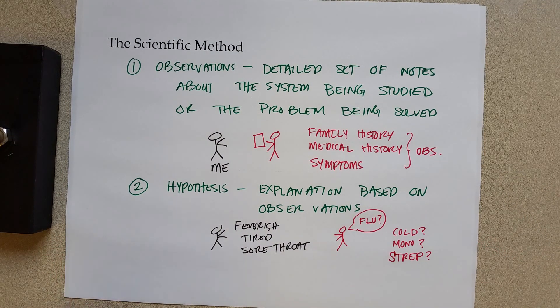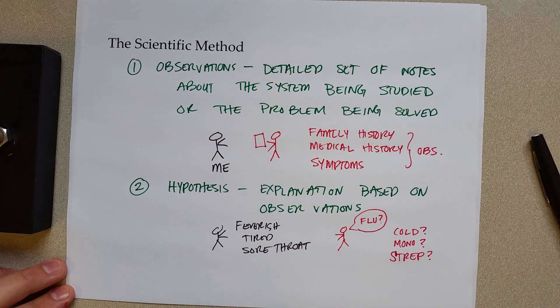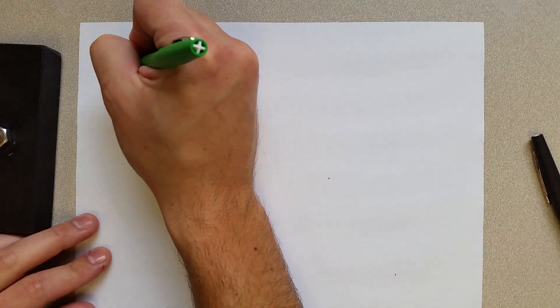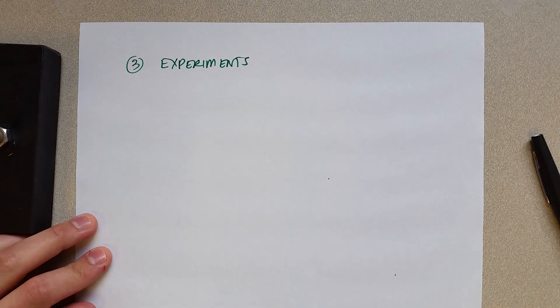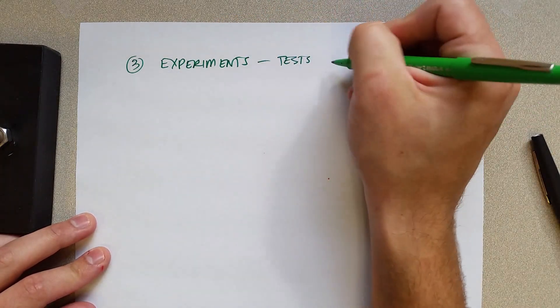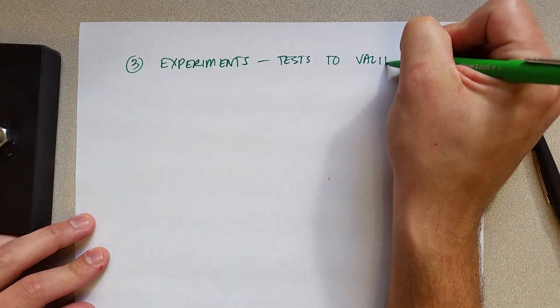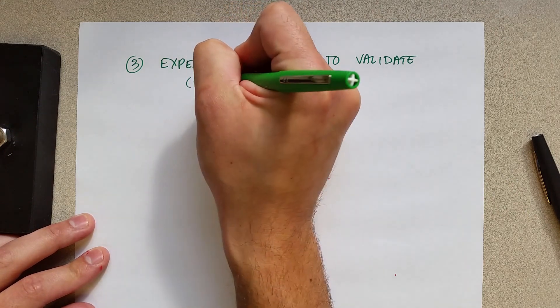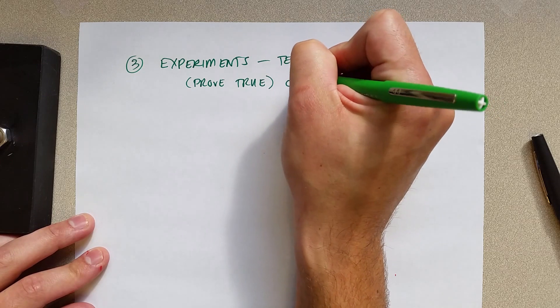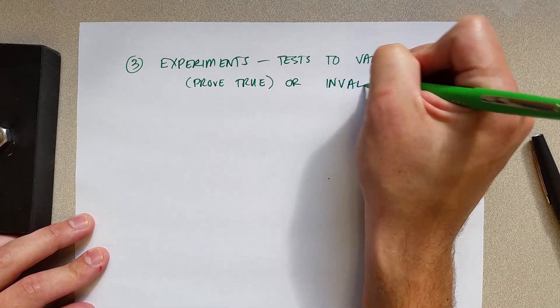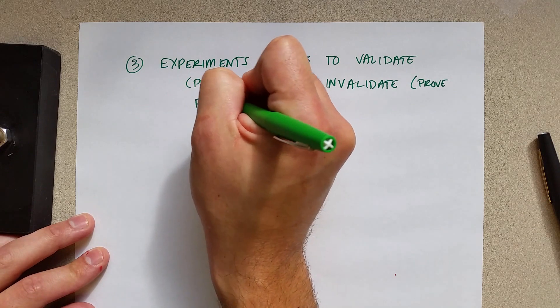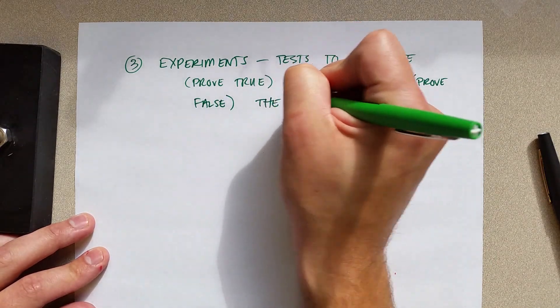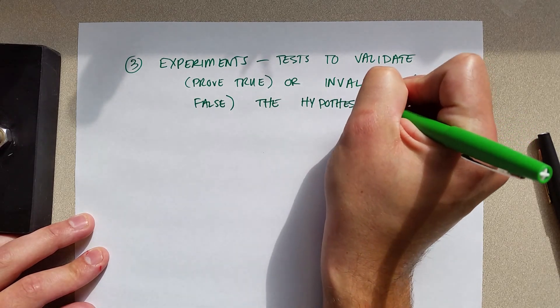The next step would be to figure out which one of these hypotheses is the most correct. And what she's going to then do is perform experiments. These are tests to validate, which means prove true, or invalidate, which means prove false, the hypothesis.